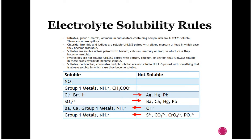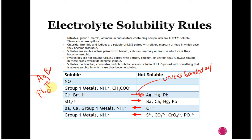Moving into the next rule: chloride, bromide, and iodide are soluble — unless bonded with silver, mercury, or lead. If they're bonded with silver, mercury, or lead, they go from soluble to insoluble. So silver bromide and lead iodide are insoluble. If chloride, bromide, or iodide is bonded with anything else, it's going to be a strong electrolyte. If it's bonded with silver, mercury, or lead, it's a non-electrolyte.